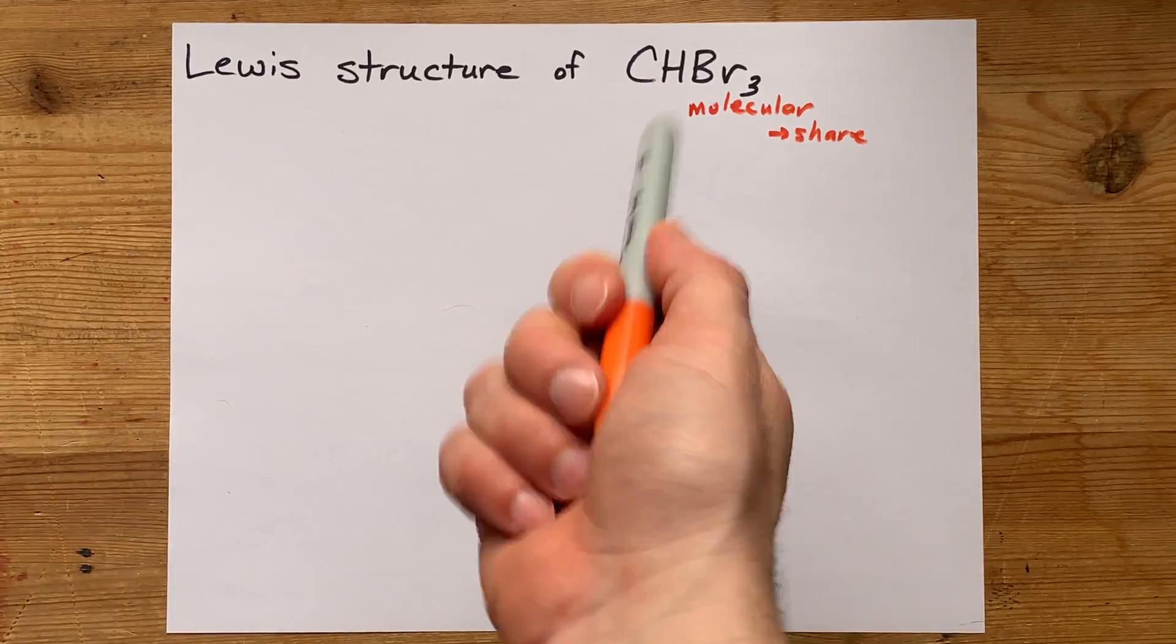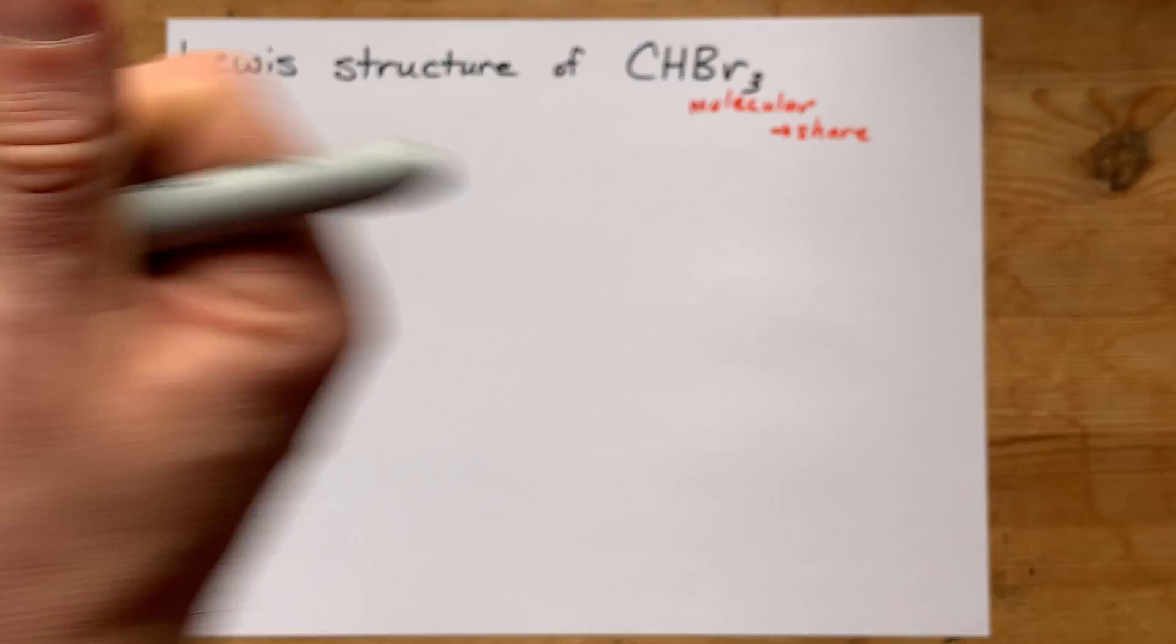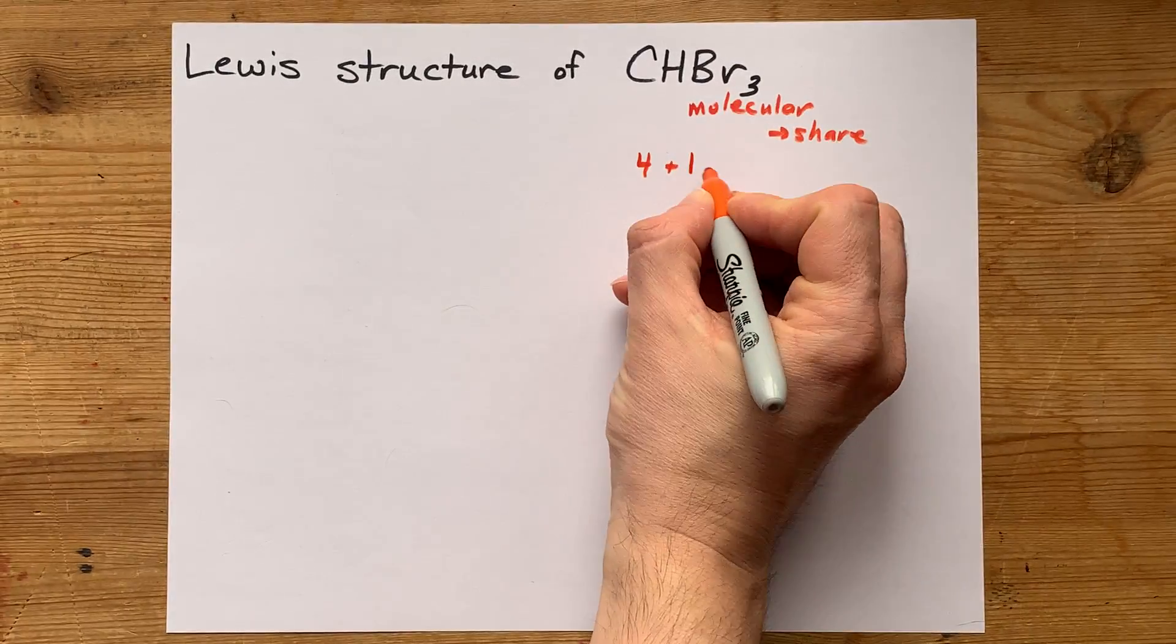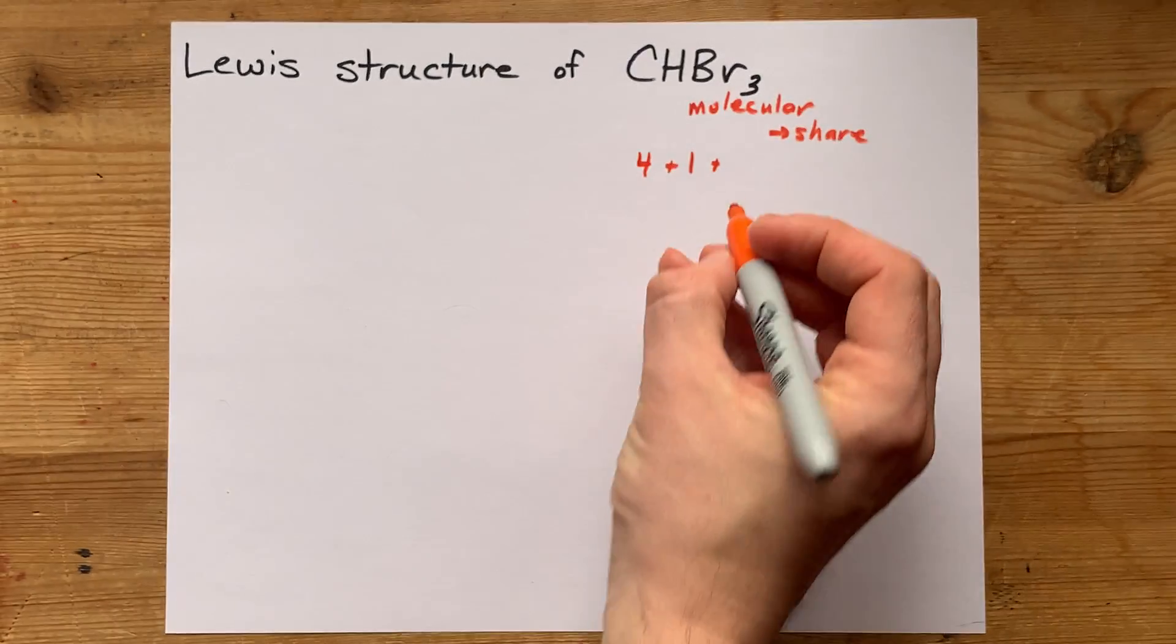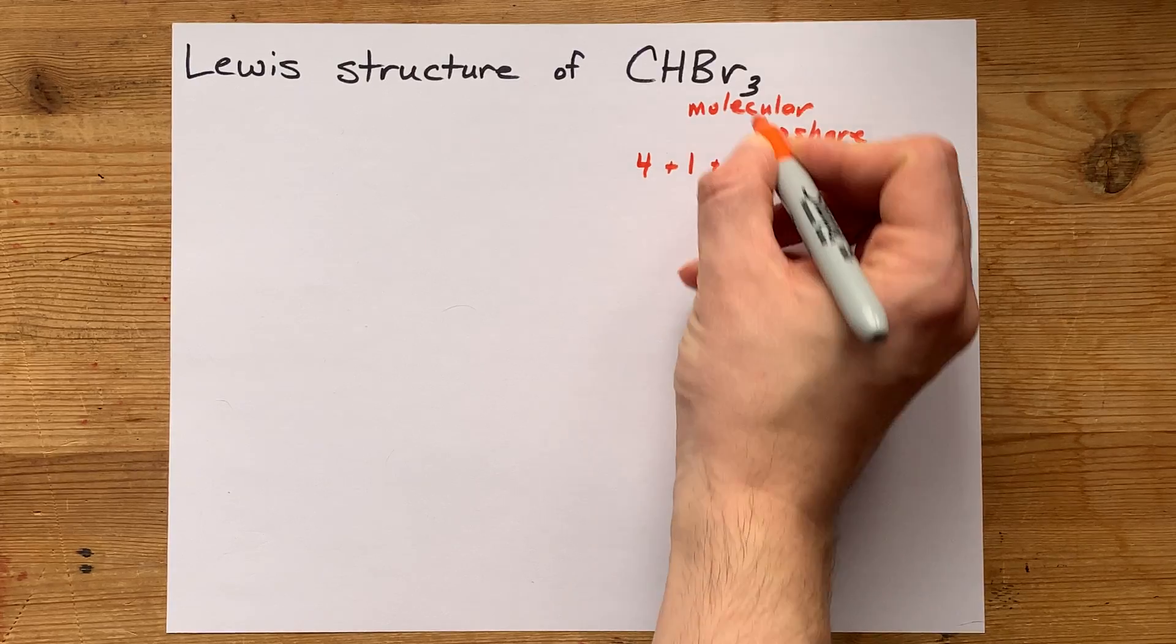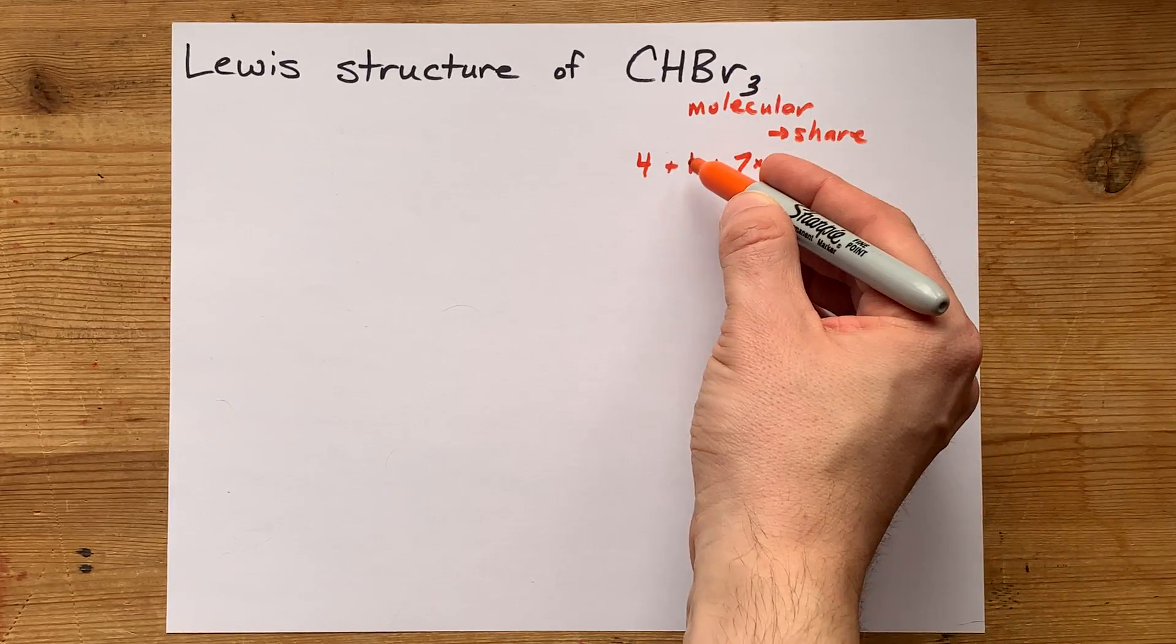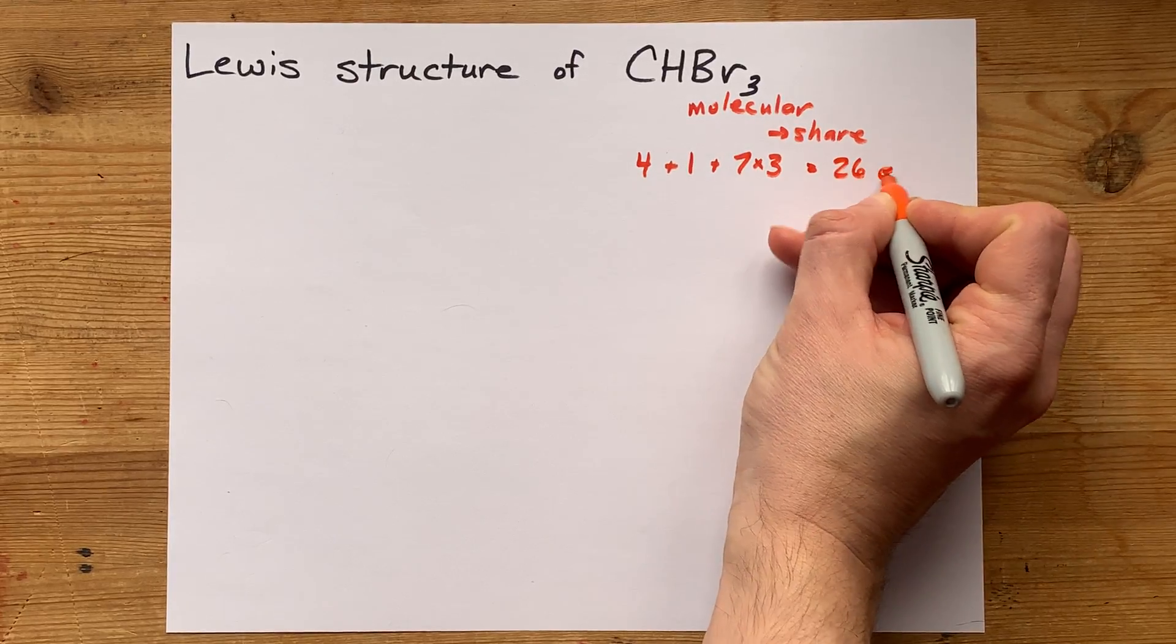Let's figure out how many electrons we're dealing with here. Carbon in group 14 brings four valence electrons. Hydrogen in group 1 brings one valence electron. And bromine in group 17 brings seven valence electrons. There are three of them because it says Br3 in the formula, so that's 21 electrons just from bromine - 22, 26 electrons total.